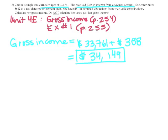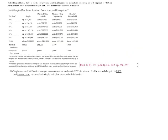We are not calculating her taxable income. Her contribution of $642 to her retirement plan and $481 in itemized deductions are relevant for taxable income, but we are only asked for gross income. It is always important to refer back to the original problem to see exactly what is being asked before calculating things you don't need. For problem 19, Stephen earned $61,966 from wages as an accountant and made $1,523 in interest. Find how much he paid in FICA and income taxes. Assume he is single and takes the standard deduction.